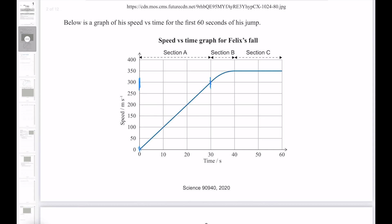As for section C, we see that the speed does not change. Felix is falling at a constant speed of 350.